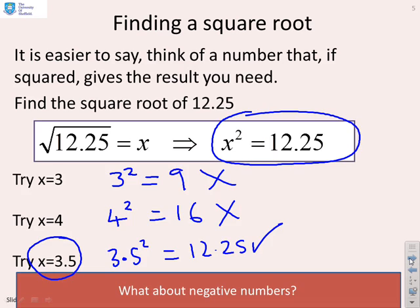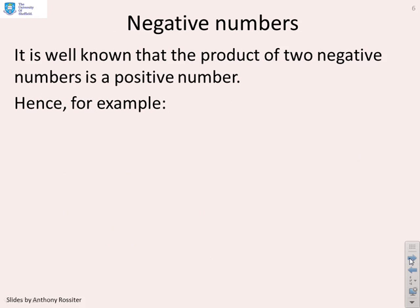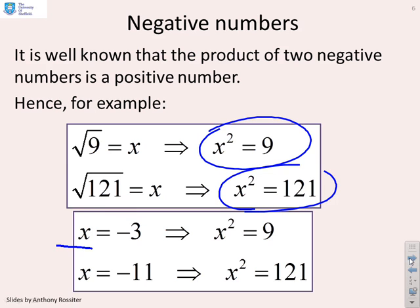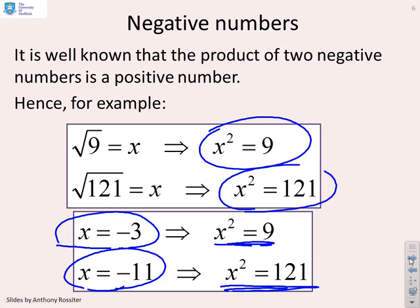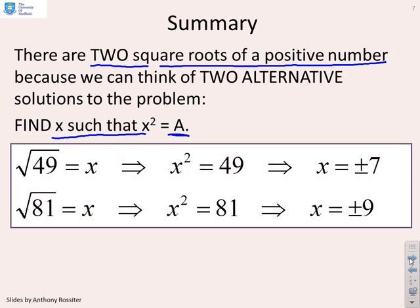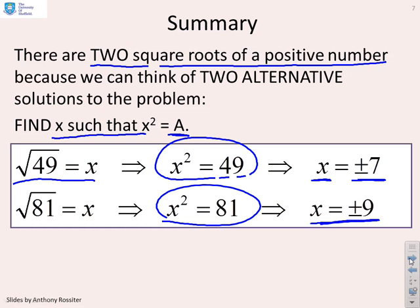Of course, there are also some negative solutions. The product of two negative numbers is a positive number, so if I'm trying to solve x squared equals 9, I could let x equal minus 3, because then x squared is indeed 9. Or let x equal minus 11, and then x squared equals 121. This tells me there are two possible solutions for the square root of a positive number. So if you find x such that x squared equals a, where a is a positive number, there are two solutions — for example, the square root of 49 gives x equals plus or minus 7, and x squared equals 81 gives x equals plus or minus 9.